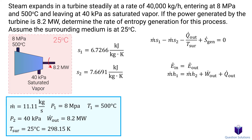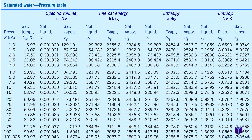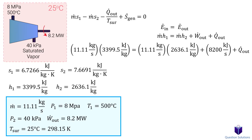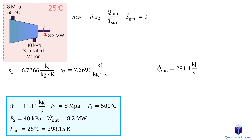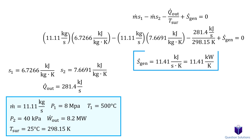To solve for heat loss, we look up h1 and h2 from steam tables. At 8 MPa and 500°C we get h1, and at 40 kPa saturated vapor we get h2. Plugging into the energy balance — noting that 8.2 MW equals 8200 kJ/s — gives us the heat transfer. Now with all values known, we plug them back into the entropy balance equation and solve. That gives us our answer for entropy generated.